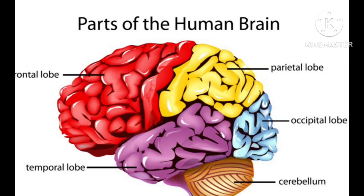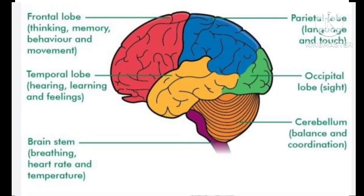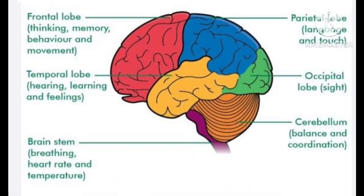Now let us see about the functions of each lobe. The frontal lobe is responsible for thinking, memory, behavior, and movement. The parietal lobe is responsible for language and touch. The temporal lobe is responsible for hearing, learning, and feelings. The occipital lobe is responsible for vision or sight. So these are the functions of the lobes of the cerebrum.